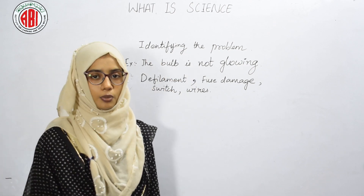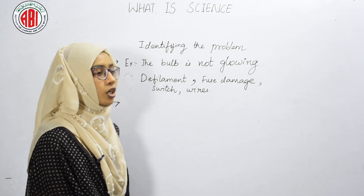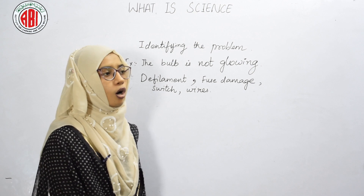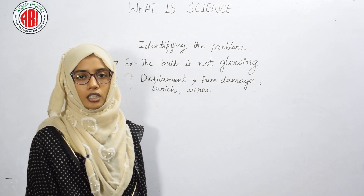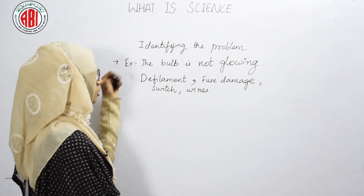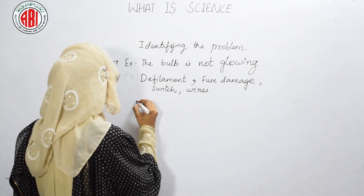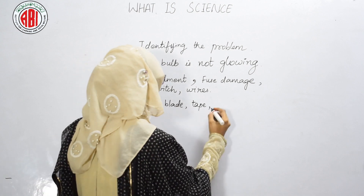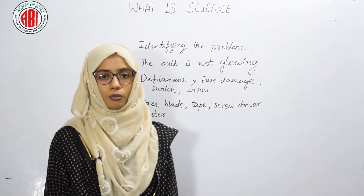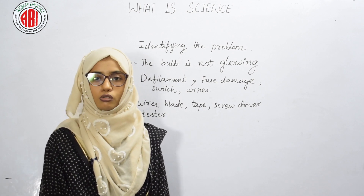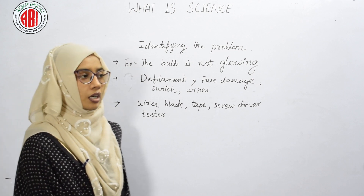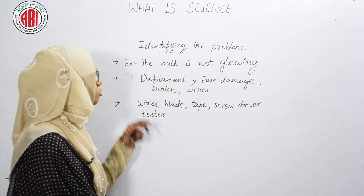The next step is planning an experiment. To plan the experiment, we need to collect the information, apparatus, and materials required to conduct the experiment. To solve this problem, we need materials like wires, a blade, tape, and a screwdriver. After collecting the materials, the next step is conducting the experiment.